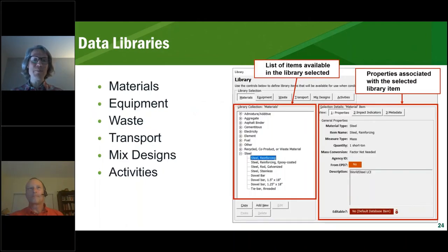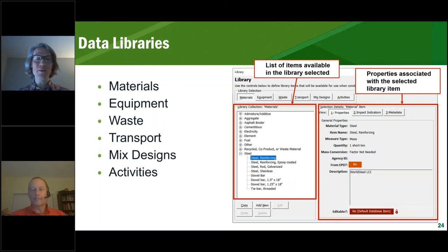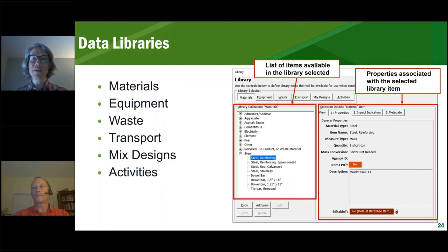The data libraries are organized in materials, equipment, waste, transport, mix designs, and activities. Here you see the example of looking through the database where on the left you see the collection of materials organized in certain categories which you can copy or add new ones. On the right you see information about those materials so the analysis can be performed. The tool calculates everything back to a mass basis, so everything can be connected to transportation and waste by putting in mass at one point.